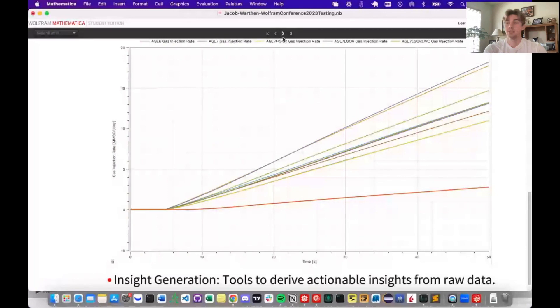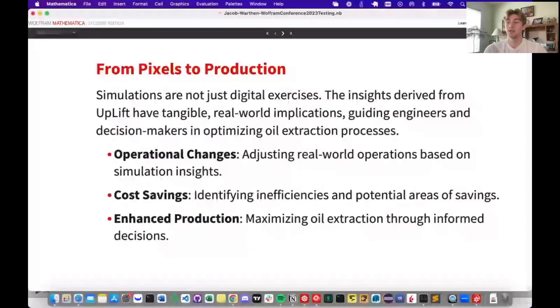In the age of visualization, Uplift stands as a beacon, turning bytes into barrels, pixels into production. With Uplift's precision, operations aren't based on guesswork, but grounded in data. When simulations signal a change, the ground reality shifts in tandem. Adjusting valves, tweaking pressures, or reconfiguring layouts. Every insight guides a move that impacts production. Efficiency is currency in oil extraction. Uplift's keen eye spots the tiniest inefficiencies. And in the tangible world, this translates to tangible savings. Cutting down on wastage, optimizing resource usage, and making every dollar count. That's the Uplift promise. More than just simulations, Uplift's insights have a ripple effect. Guided by digital clarity, real-world operations fine-tune, adapt, and evolve, ensuring that every drop of oil potential is realized. Peak production isn't a hope, it's a data-driven reality. Uplift doesn't just dwell in the digital domain. It resonates in the real world. Every pixel has a purpose. Every simulation has significance, guiding the dance of machinery and the pulse of production.